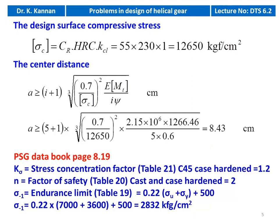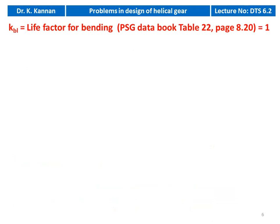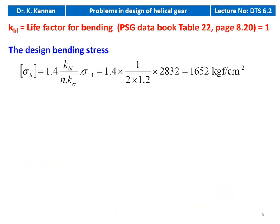To calculate the bending stress, we require the following data: stress concentration factor Kσ = 1.2 from table 21, factor of safety N = 2 from table 20, and endurance limit from table 19. For carbon steel C45: σ₋₁ = 0.22(σu + σy) + 500 = 0.22(7000 + 3600) + 500 = 2832 kg/cm². Life factor Kb = 1. Design bending stress σB = 1.4 × Kb / (N × Kσ) × σ₋₁ = 1.4 × 1 / (2 × 1.2) × 2832 = 1652 kg/cm².